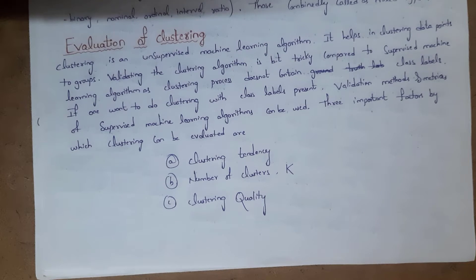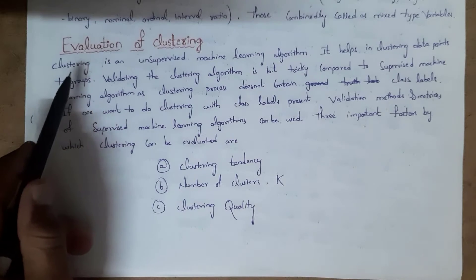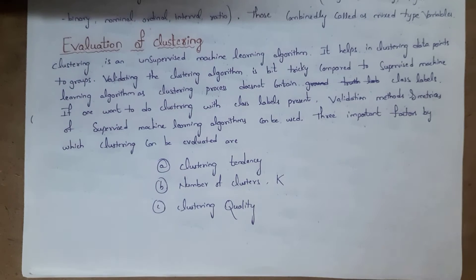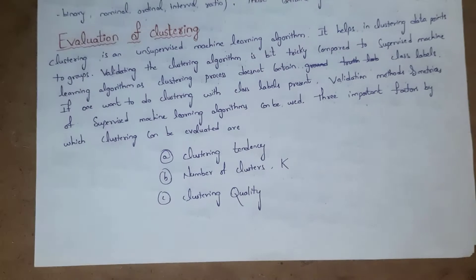As we know, clustering is an unsupervised machine learning algorithm. In unsupervised machine learning, we train our algorithm without any class label. Evaluation is nothing but validating whatever clustering algorithm we created — we are verifying whether this algorithm is working or not. But compared to supervised machine learning algorithms, validating unsupervised learning algorithms is very complicated, because we do not train our algorithm using labeled data; we train it using unlabeled data.